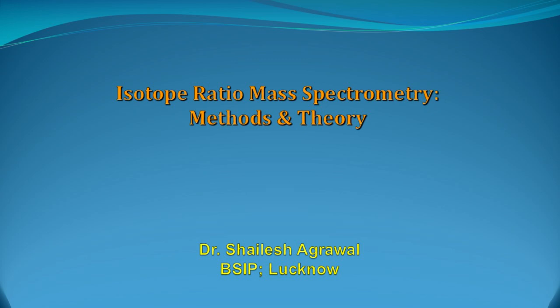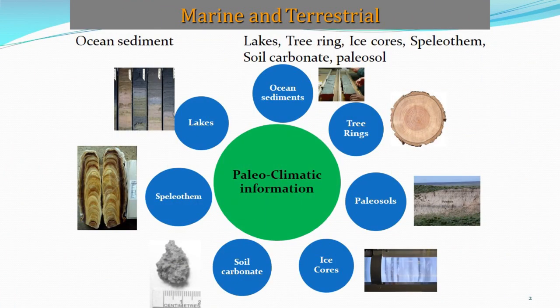Before giving fundamental details of isotope ratio mass spectrometer, I would like to discuss about its applications in the field of earth science. It is well known that the earth's climate has been changing for billions of years, continuously fluctuating between warmer and cooler periods. But there were no humans on earth in that time scale to document all these events. In such conditions we use different archives like marine and terrestrial where all these climatic signals are preserved.